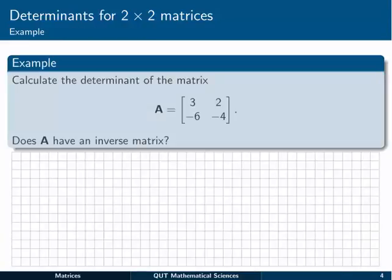Let's try that out in an example. We've got to calculate the determinant of the matrix 3, 2, minus 6, minus 4, and then we're asked, does A have an inverse matrix? So that's one of those uses again. So let's have a look. The determinant of A is simply going to be given by doing that criss-cross that I was talking about before.